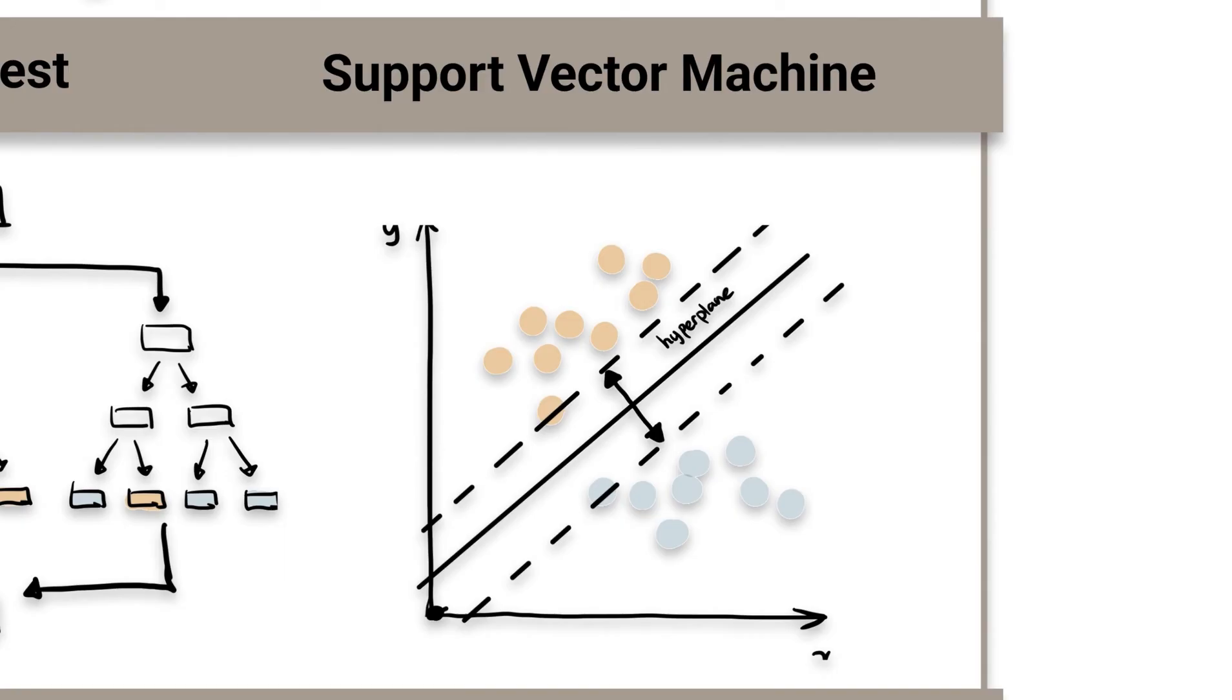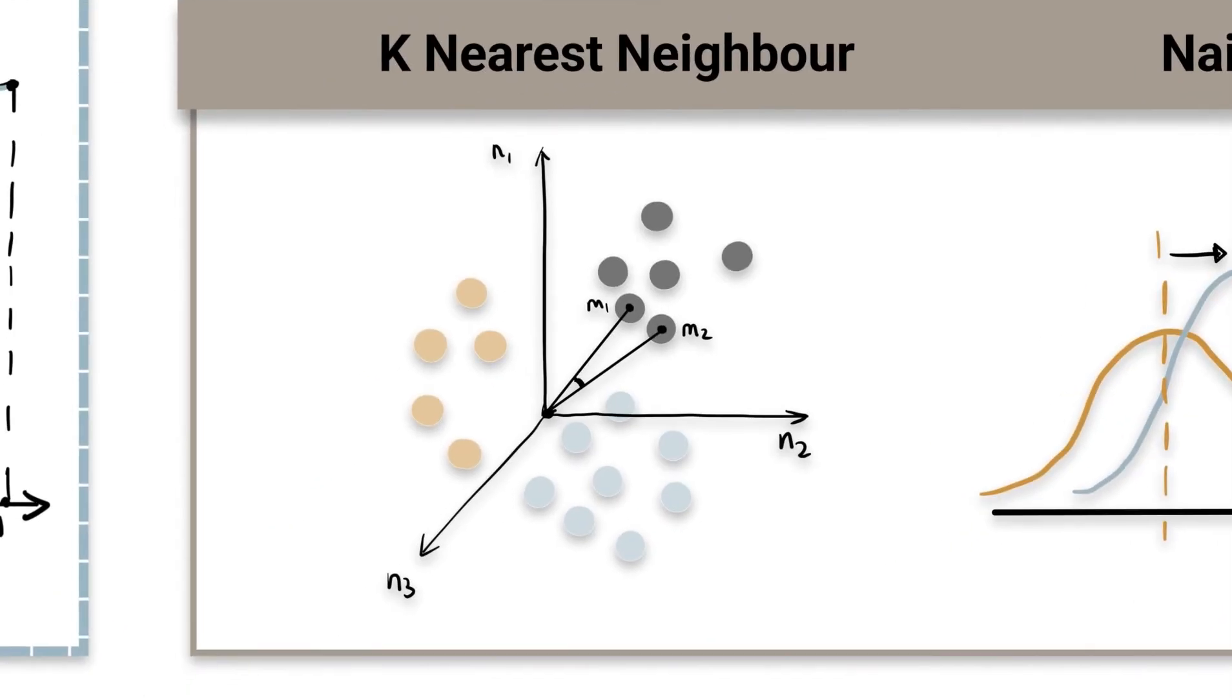You can think of k-nearest neighbor algorithm as representing each data point in an n-dimensional space which is defined by n features. It calculates the distance between one point to another, then assigns the label of unobserved data based on the labels of nearest observed data points. KNN is also commonly used in recommendation systems.